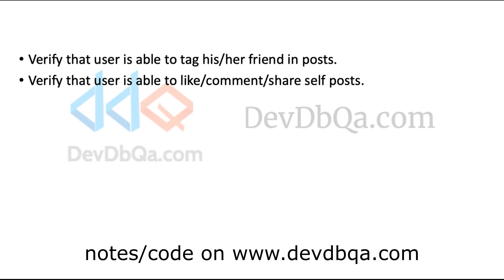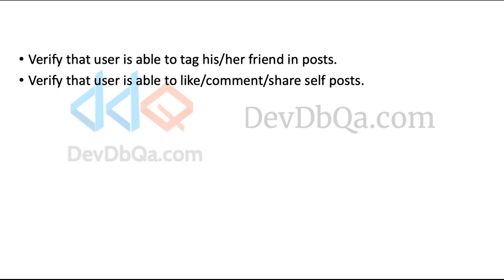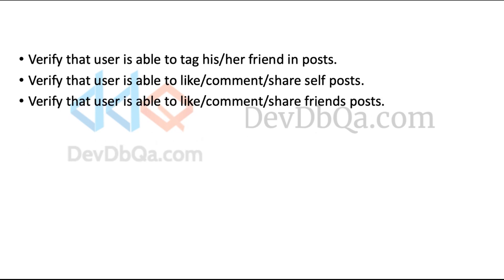Verify that user is able to like, comment, and share self posts — the user should be able to like, comment, and share posts written by themselves. Verify that user is able to like, comment, and share friends' posts — the user should be able to interact with posts done by friends.